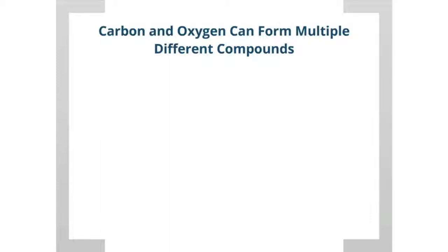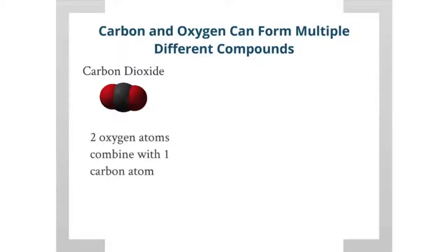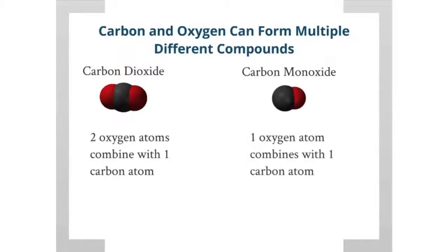For example, carbon and oxygen can form carbon dioxide, which has two oxygen atoms combining with one carbon atom. Carbon and oxygen can also form carbon monoxide, which is one oxygen atom combining with one carbon atom.